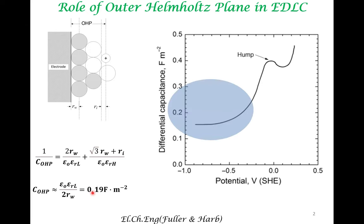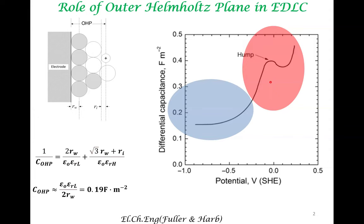Let us compare this estimated capacitance value to values obtained from experiments. In the regime represented by these potentials, we are able to get a reasonable quantitative estimate of capacitance. Yet, this region is quite complex — there is a non-monotonous change in capacitance with potential, and we will try to look at some of the reasons why this may occur.